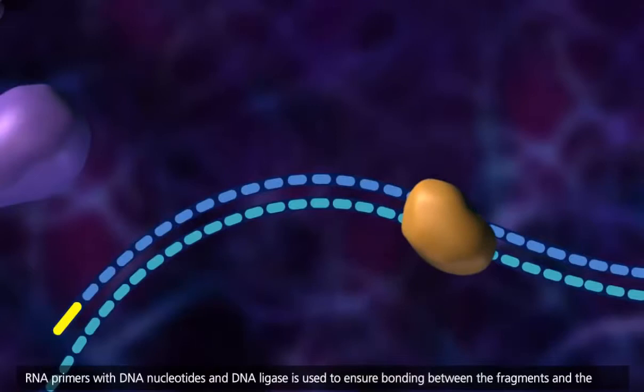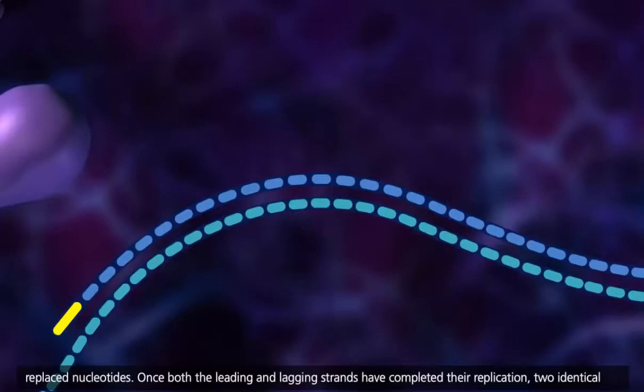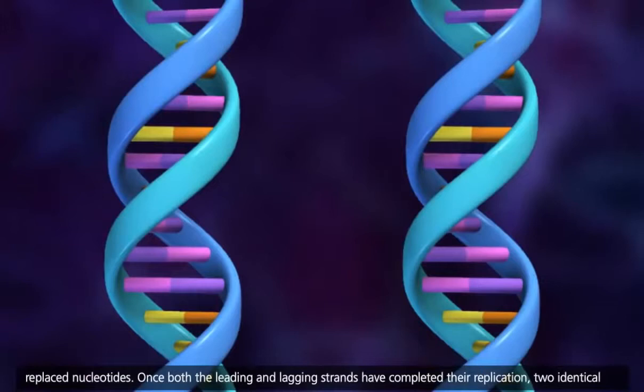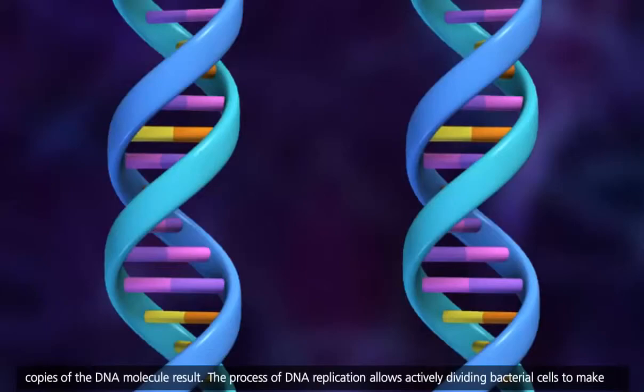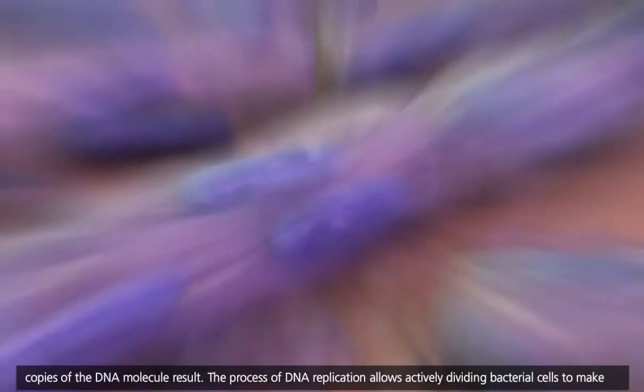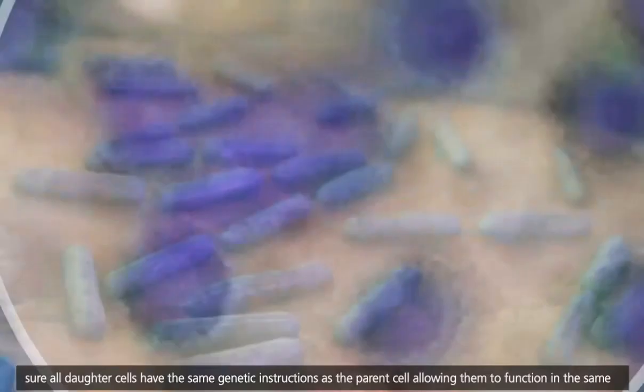Once both the leading and lagging strands have completed their replication, two identical copies of the DNA molecule result. The process of DNA replication allows actively dividing bacterial cells to make sure all daughter cells have the same genetic instructions as the parent cell, allowing them to function in the same manner. Thus, bacterial populations can grow, increasing the number of individuals in a colony.